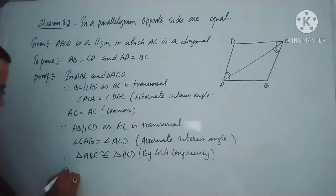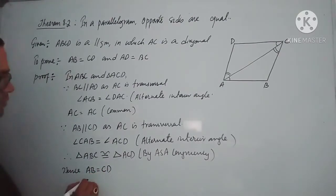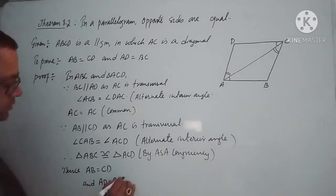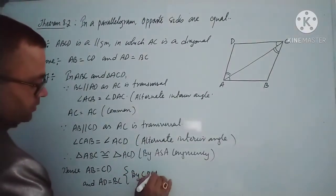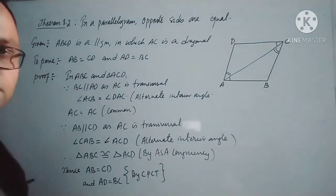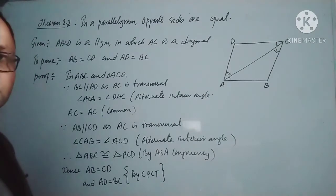Hence, if the triangles are congruent, the corresponding sides are equal: AB equals CD and AD equals DC. The reason is CPCT — corresponding parts of congruent triangles. Okay, this was for today, thank you.